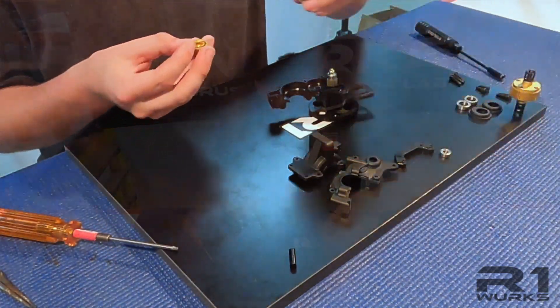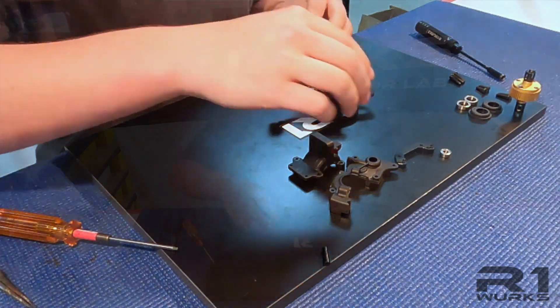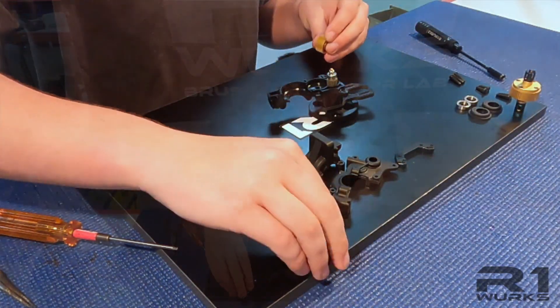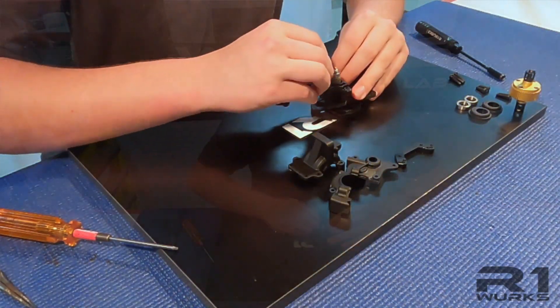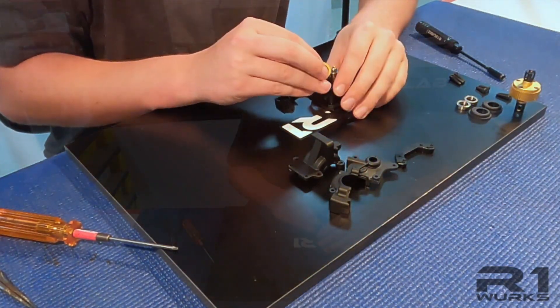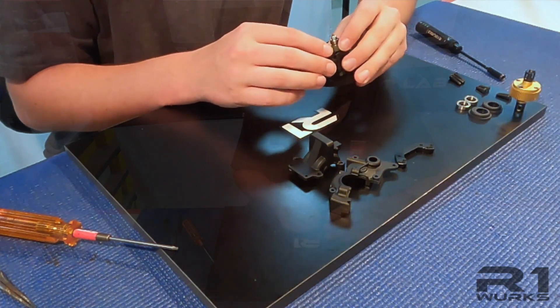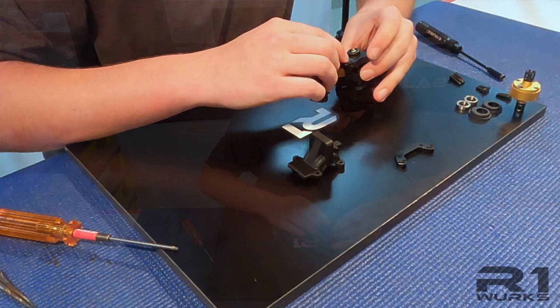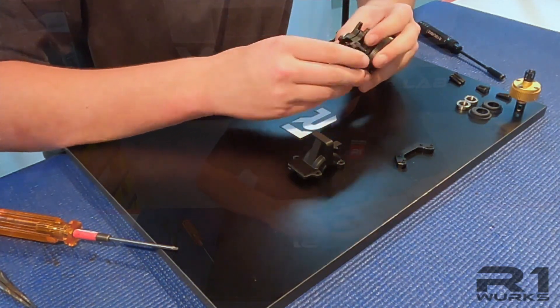Now we need to put the bearings into the idler here. And then we will use the idler pin to align this and make sure these are meshing properly. And then we will put the case on.